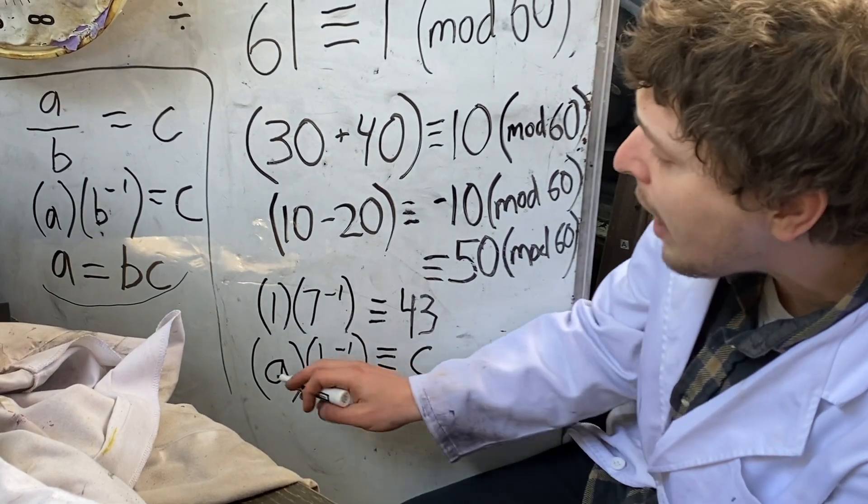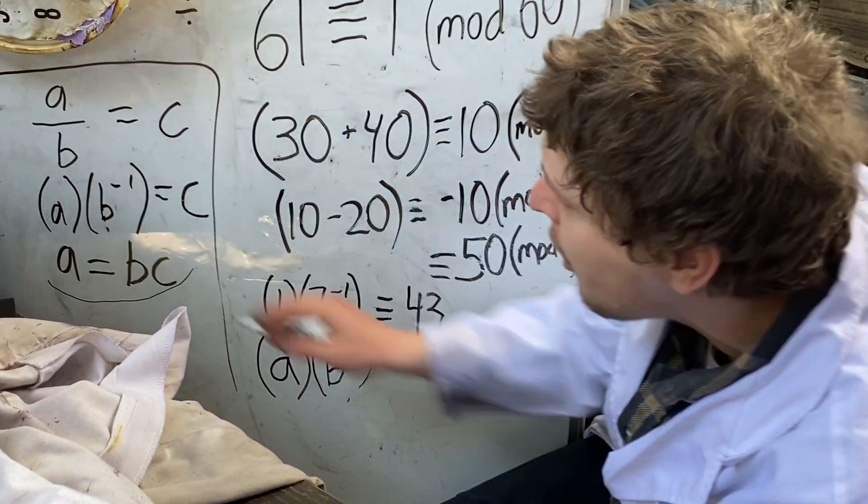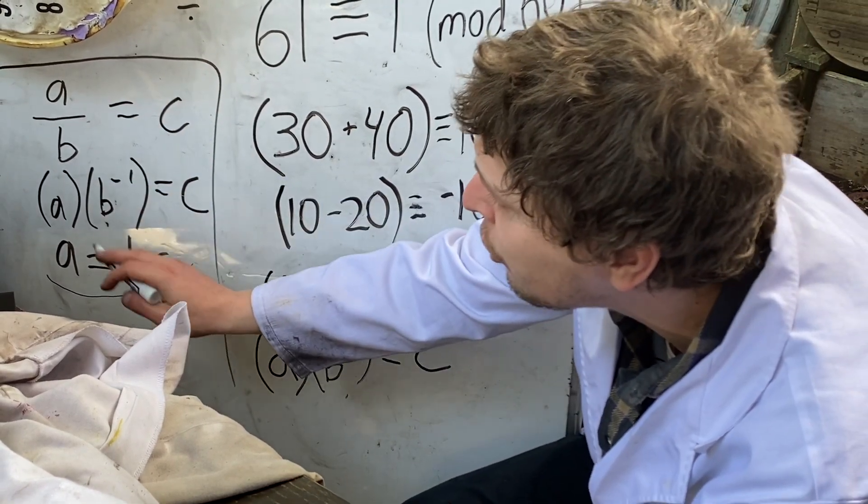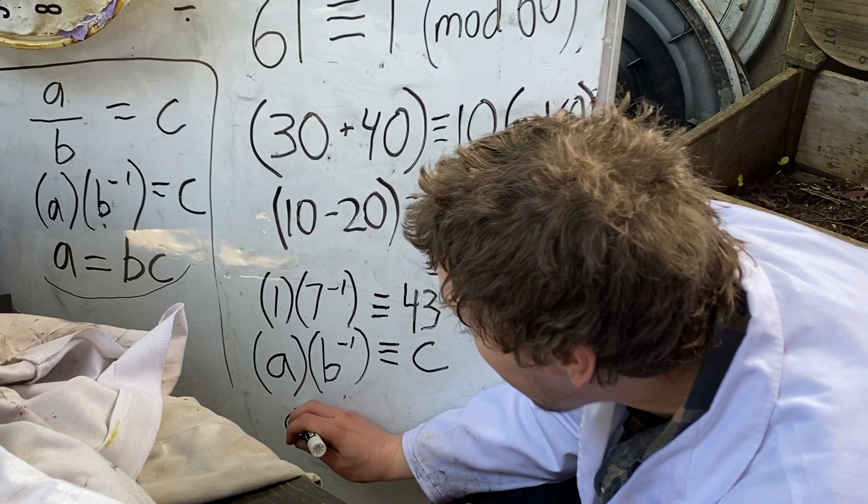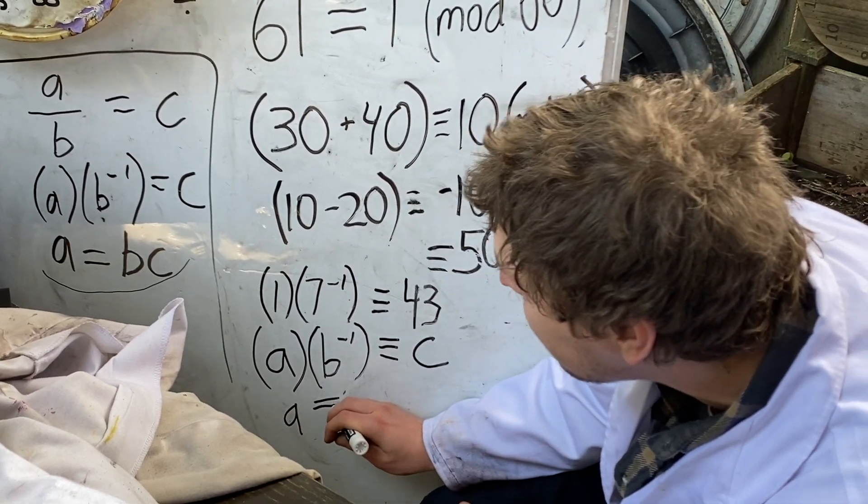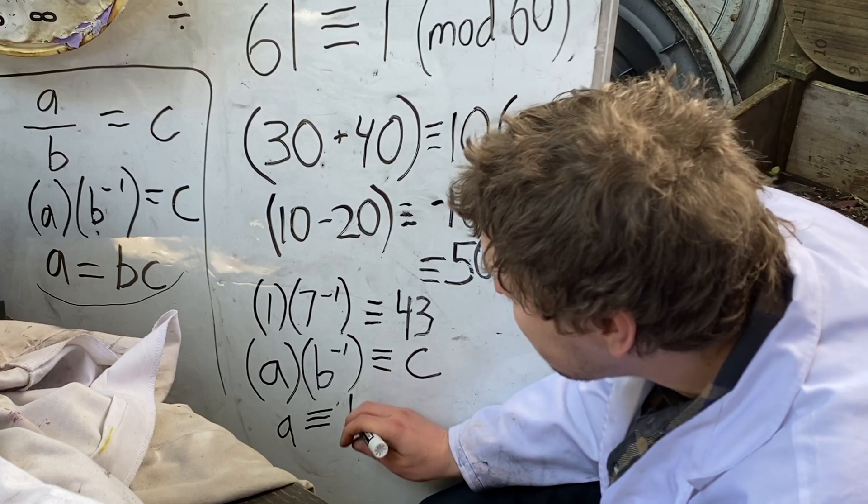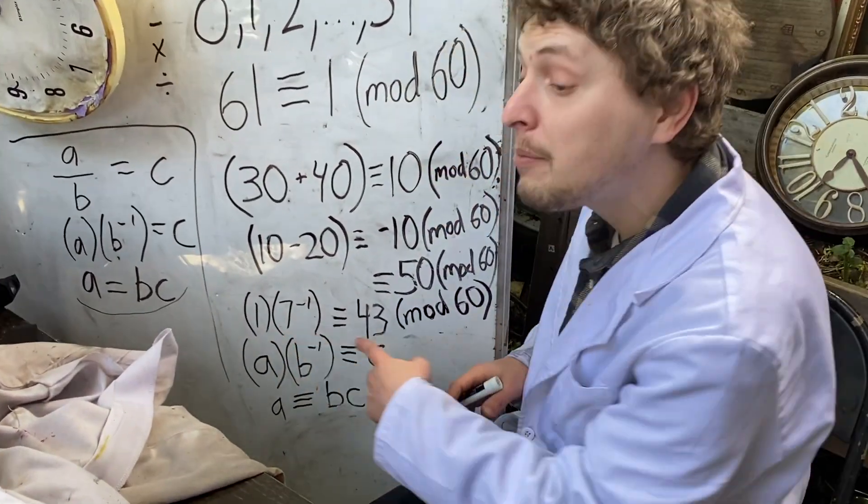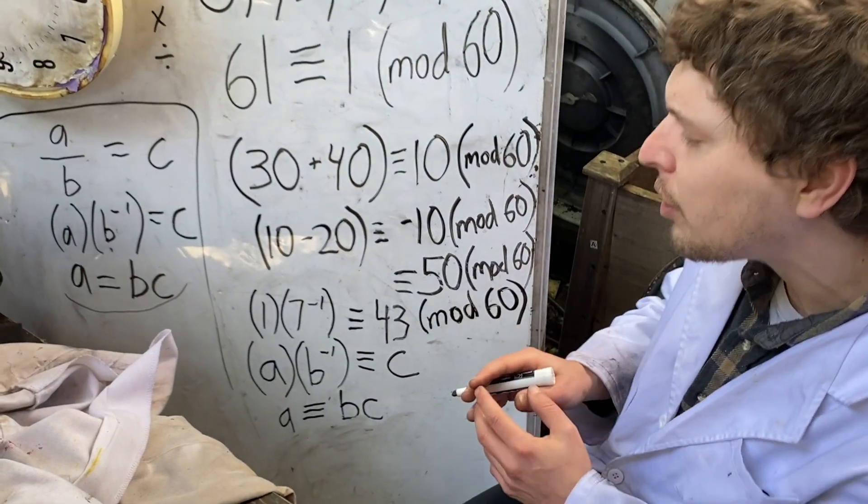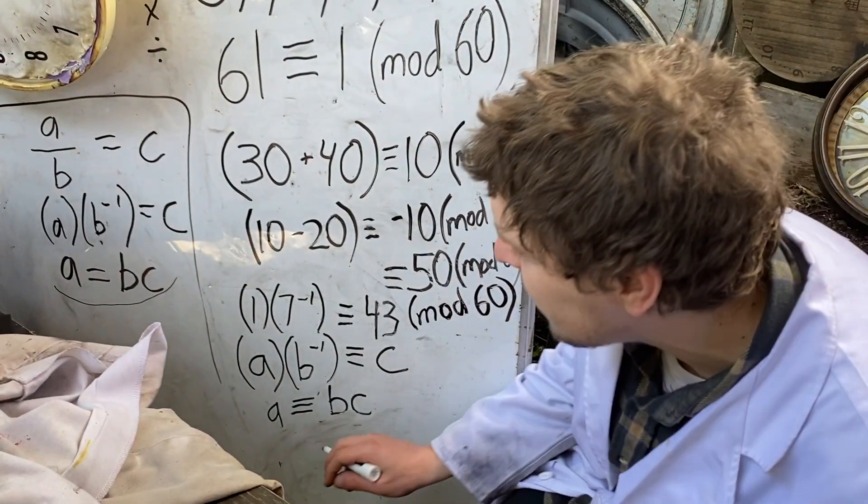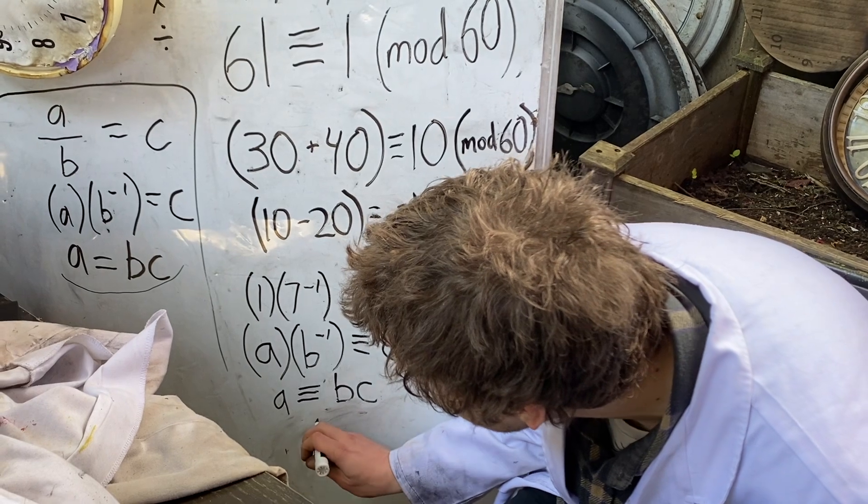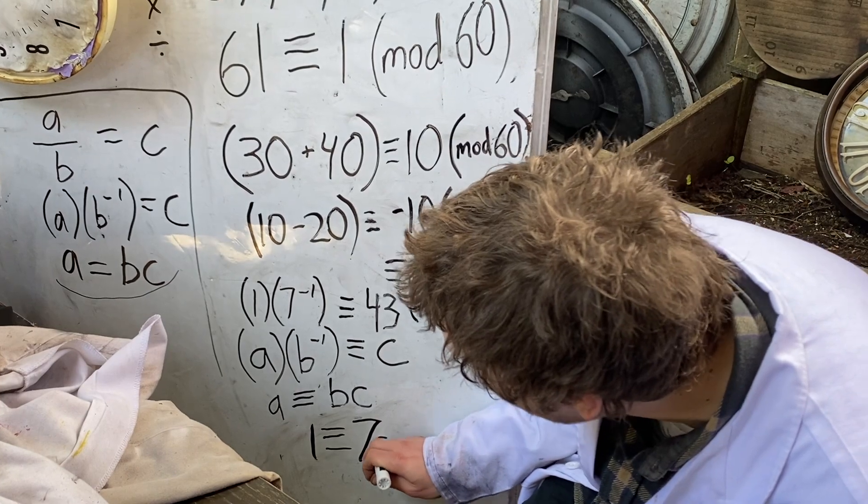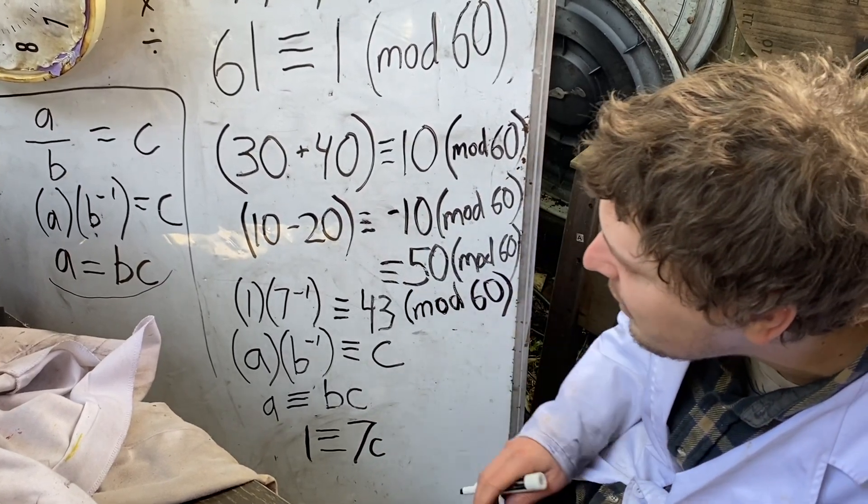Although we're not going to write this like a fraction looking a over b, we can apply this property where it's equivalent to a being congruent to b times c. So when we ask for 1 divided by 7 in a modular way, it's secretly like saying 1 is congruent to 7 times what? What is that c value?